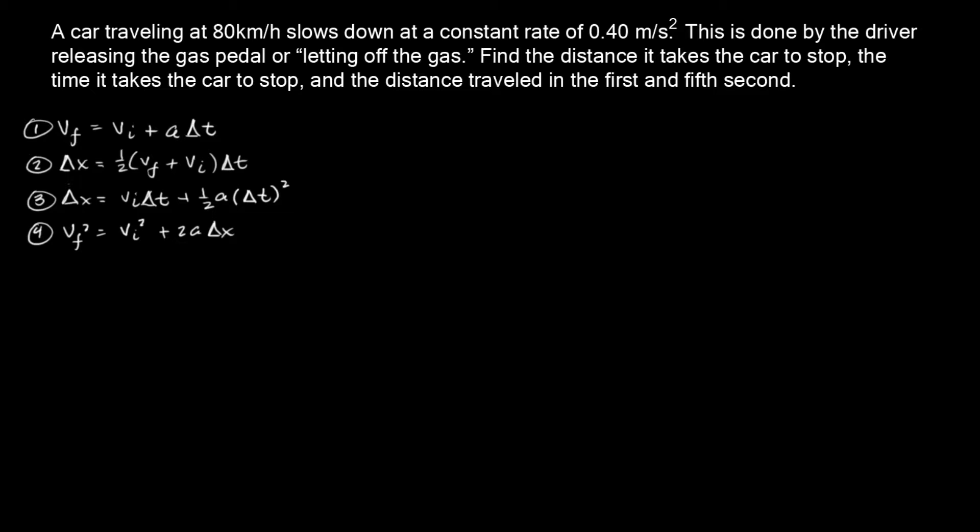In this case it's a deceleration, because it's decelerating at a constant rate of 0.4 meters per second squared. We have to find the distance it takes the car to stop, the time, and the distance traveled in a time interval. The first thing we notice is that the units of measure are different — kilometers per hour versus meters per second.